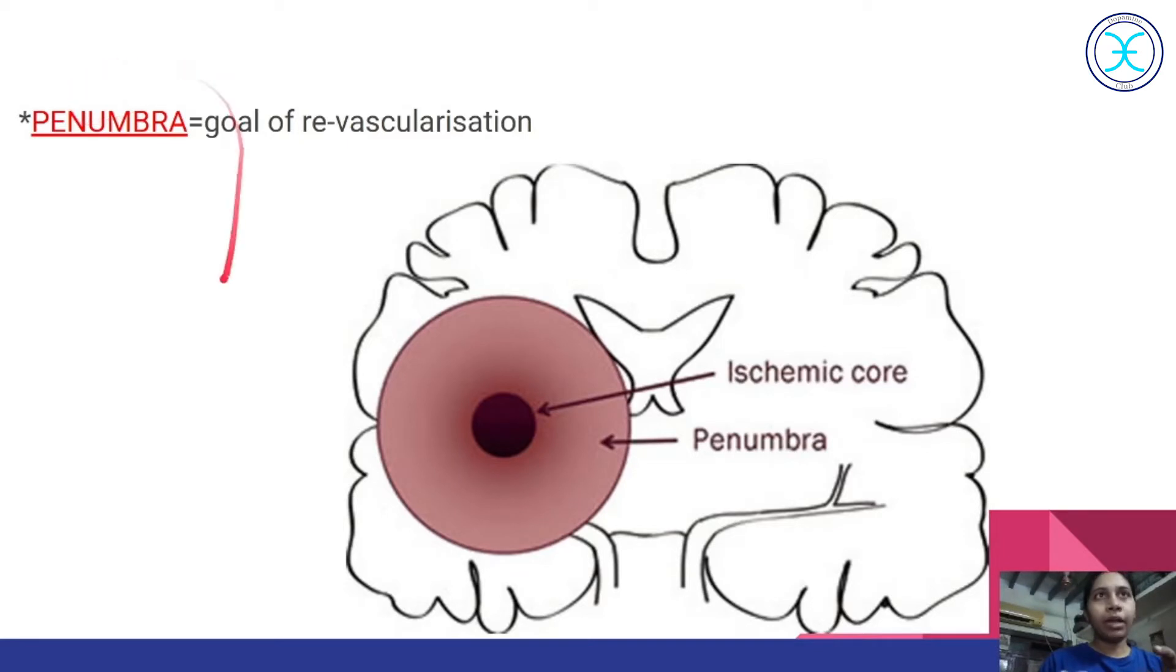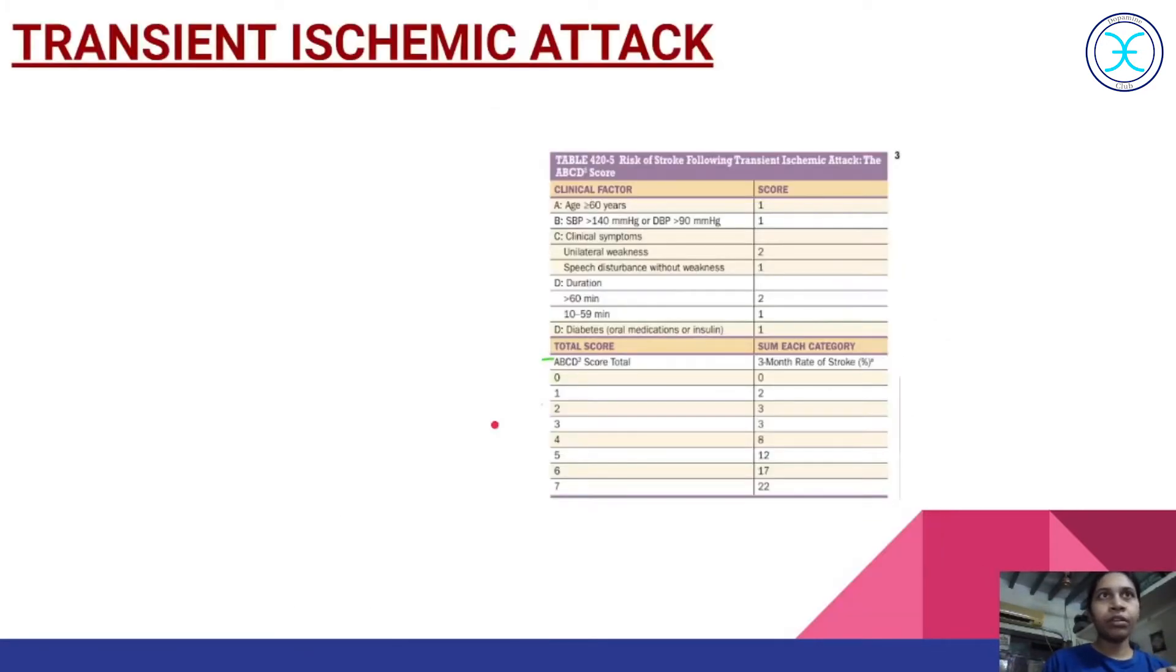Now let us talk about the important topic penumbra. Penumbra is nothing but an ischemic region which can be revived again after reperfusion. Our main goal for the ischemic stroke is to revive this penumbra. Now we have to know another important term called transient ischemic attack. Here, the transient ischemic attack is like a stroke event but this event occurs briefly when compared to that of the stroke. Now why we have to learn this is because when a person gets a transient ischemic attack, they have 20 to 30% chance of getting stroke in their future.